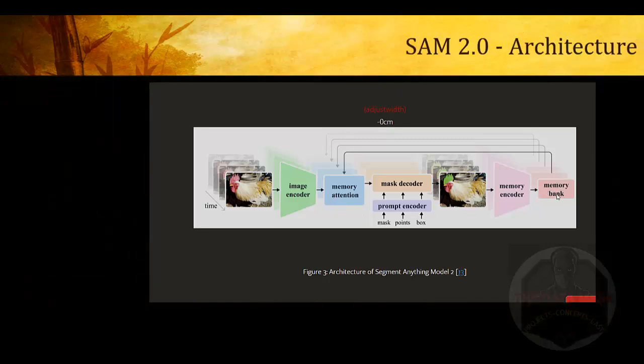To improve this, Facebook brought Segment Anything Model 2 in 2024, and here the architecture is slightly changed. The major change here is memory attention. The memory mask or memory bank will be maintained and that bank will be fed back as a memory attention. Given an image or multiple images in form of videos, it will be fed into the image encoder. The image encoder will be fed into the mask decoder along with the prompts if the user has given any prompt. After this, the image segmentation will be done.